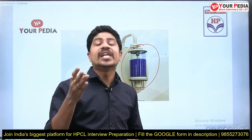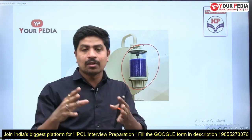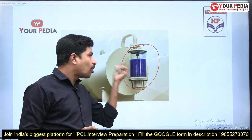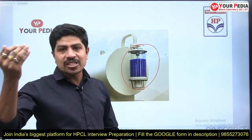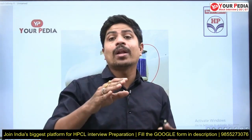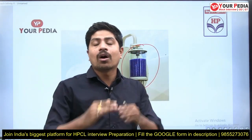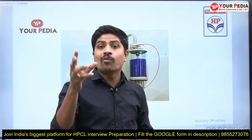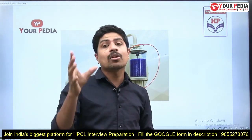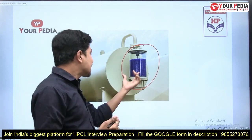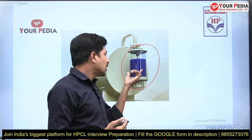That air entering is going to deteriorate the insulation property of the oil. The air coming from the outside atmosphere has moisture, and that moisture may deteriorate the quality of the oil in the transformer. To remove that moisture, silica gel is kept in the breather.